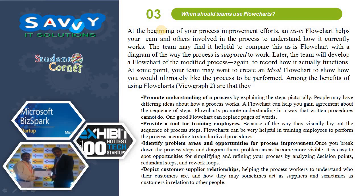When should teams use flowcharts? At the beginning of your process improvement efforts, an as-is flowchart helps your team and others involved in the process to understand how it currently works. The team may find it helpful to compare this as-is flowchart with a diagram of the way the process is supposed to work. Later, the team will develop a flowchart of a modified process to record how it actually functions.